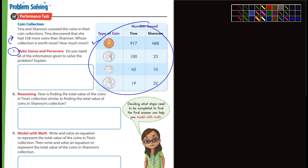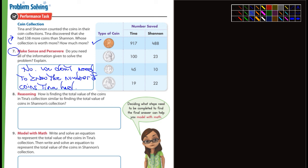I think what they're asking you here in question seven is, do you need all that information to solve the problem? Well, you need all that information, but you don't need this. In other words, Tina discovered that she has 538 more coins, that's not necessary. So the answer is no, really. We don't need to know the total number of coins Tina had. The total number of coins doesn't matter. I should be more specific.